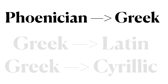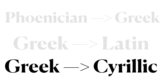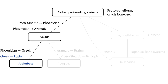The Phoenician writing system, which was an abjad, was used to develop the Greek writing system, which was an alphabet. The Latin and Cyrillic writing systems were each developed from Greek. We see here a history of writing system types developed over time: abjads leading to the Phoenician abjad, which led to the Greek alphabet, and the Greek alphabet led to the Latin and Cyrillic alphabets.